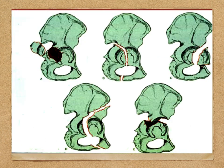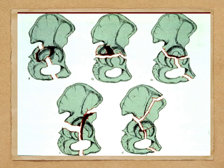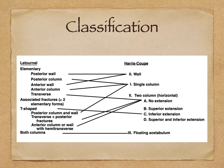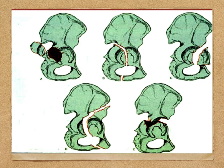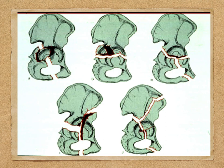Looking at the images: the first is the posterior wall fracture, the second is the posterior column, the third is the anterior wall fracture, followed by the anterior column, and the transverse fracture - completing all elementary fracture types. Moving on to the more complex associated fractures, there are different types including T-shaped and hemi-transverse which we will consider.